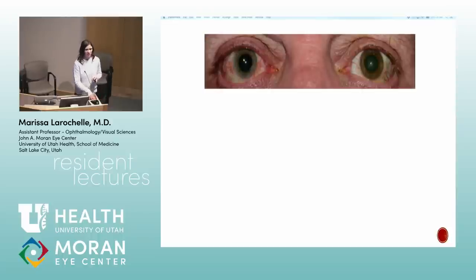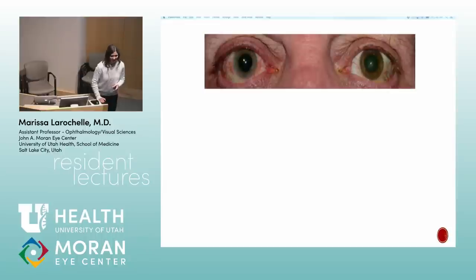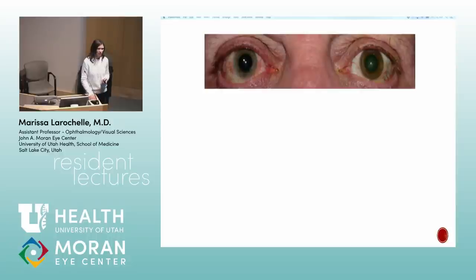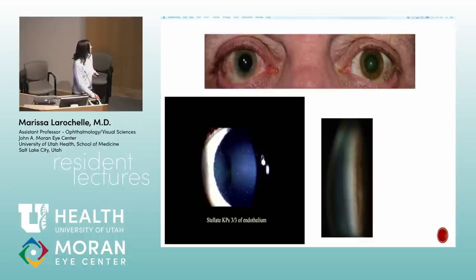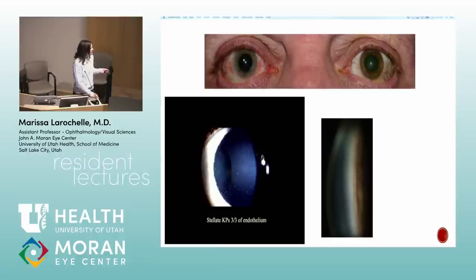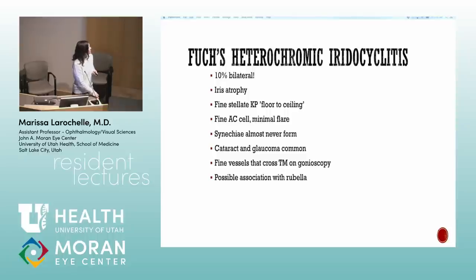Heterochromia differential outside of uveitis lecture includes Horner's syndrome and iris melanoma. In uveitis, Fuchs uveitis is the answer. Stellate KPs — small, star-like, going floor to ceiling across the whole cornea rather than just the lower portion — are characteristic of Fuchs. Fine vessels crossing the angle are seen, explaining why patients bleed during cataract surgery — the Amsler sign. Fuchs is 10% bilateral; if it's on the test, it will be unilateral.